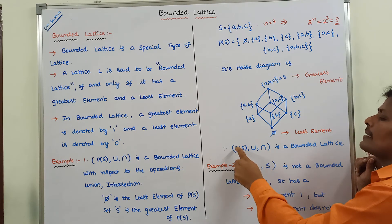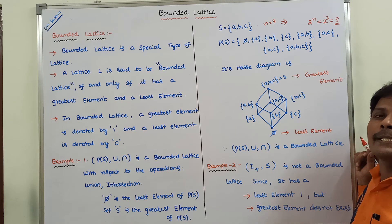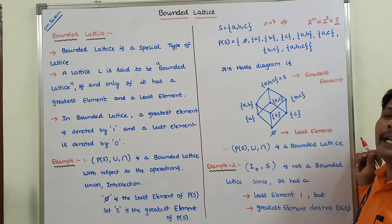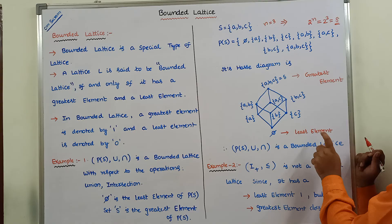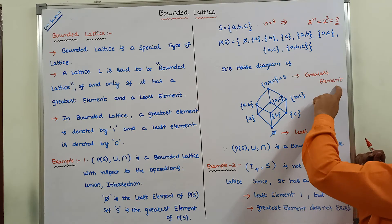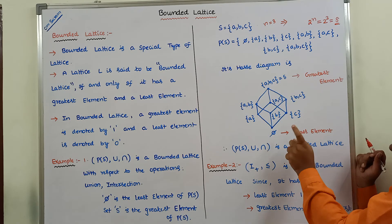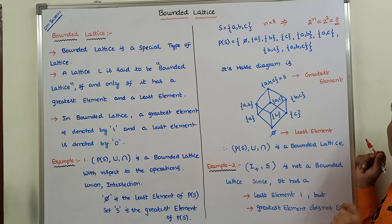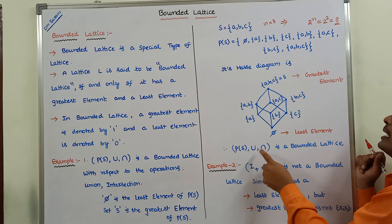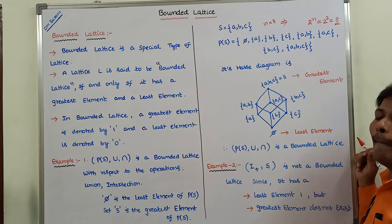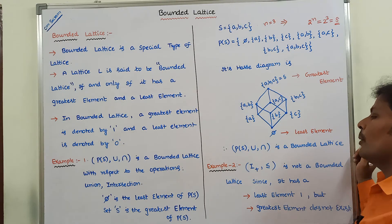This lattice is said to be a bounded lattice whenever it contains both greatest element and least element. Here the greatest element is S and the least element is pi. Hence we can say that P(S) comma union comma intersection is a bounded lattice.